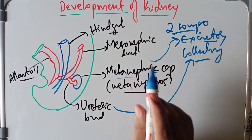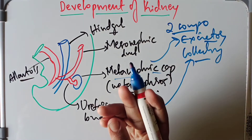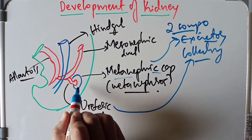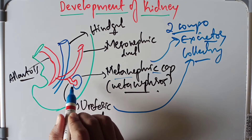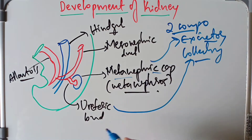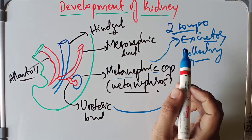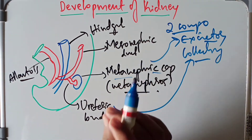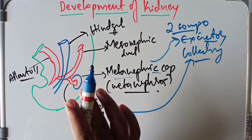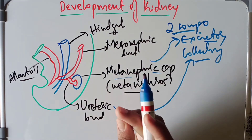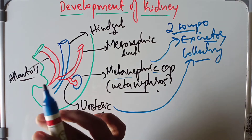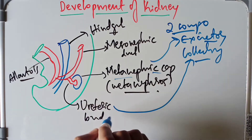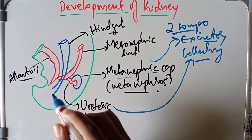The excretory component consists of the nephrons, which develop from the metanephros or metanephric cap. The collecting system consists of the collecting tubules, the collecting ducts, the minor and major calyces, the renal pelvis, and the ureter — all arising from the ureteric bud.